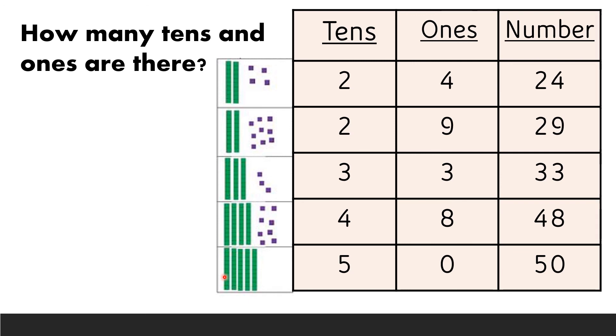The next we have 1, 2, 3, 4, 5. We have five tens. And we do not have any ones. So, the number will be 5 and 0, 50.